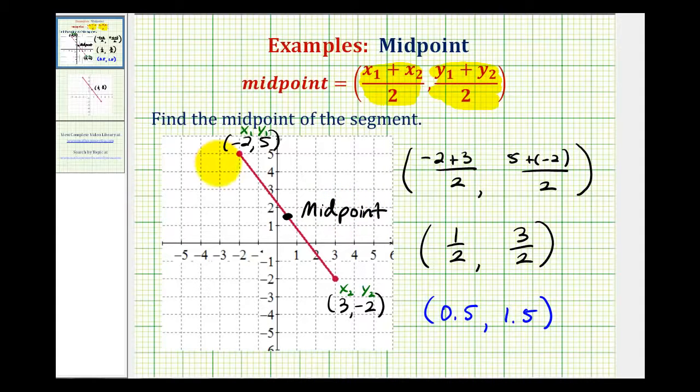Which means if this is segment AB with midpoint M, we can say that segment AM is congruent to segment MB. Which means segment AM is the same length as segment MB, which we can show using these hash marks.